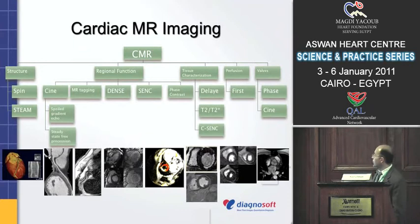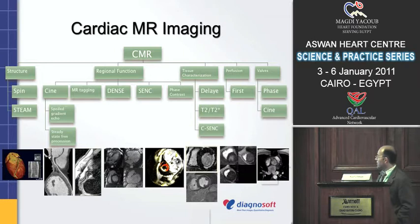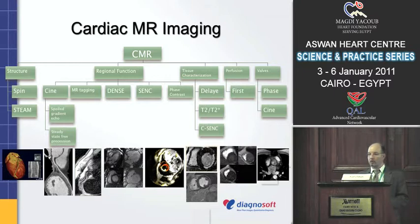I always like to show this slide to demonstrate the diversity of what you can get from MR. With MR, you can look at the structure itself — morphology — and the regional function of the heart using different techniques. You can look at tissue characterization like delayed enhancement to see the scarring of the heart, T2 star. You can also look at perfusion of the myocardium, flow and the valves, coronaries, and even the coronary artery wall itself. These are function images, movies. Here's a valve cine movie showing stenosis, and T2 star images. It's very diverse — a very rich modality to image the myocardium.